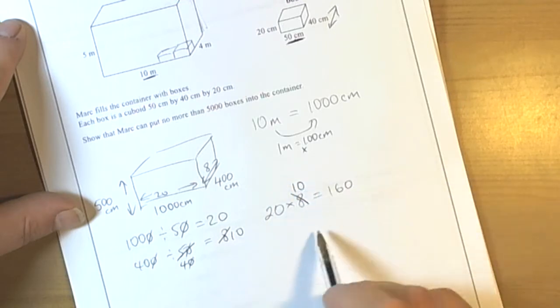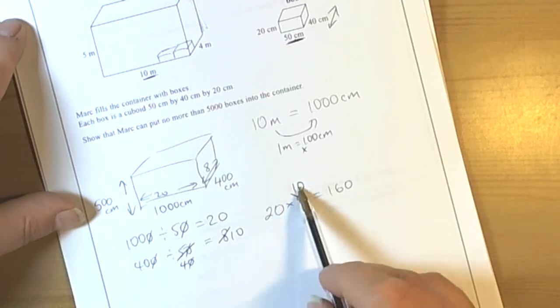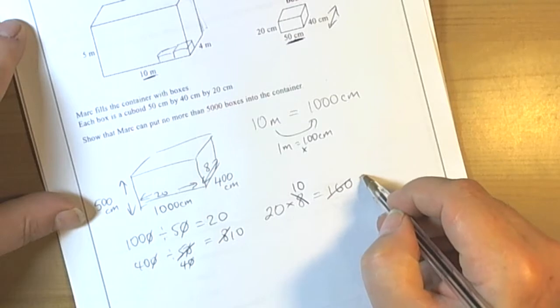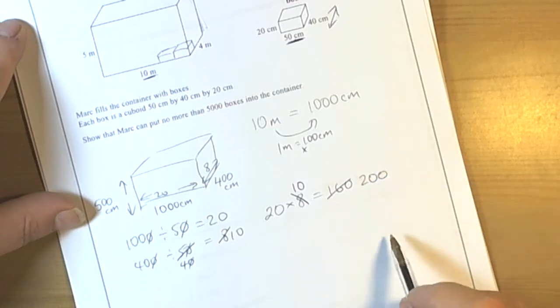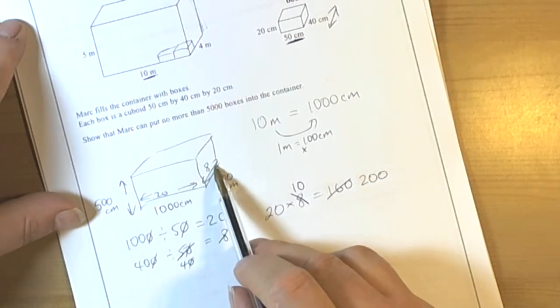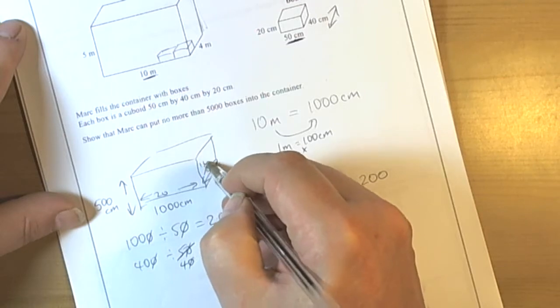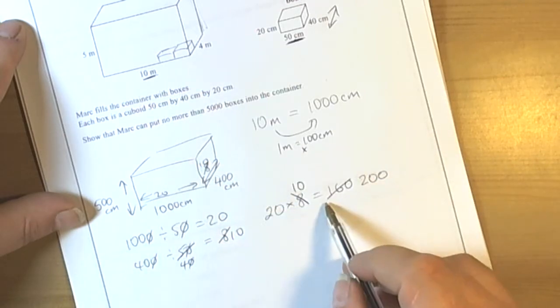Always check your working as you go through. So we've got twenty times ten which is actually two hundred. So we're going to have ten along that width, so the bottom layer is actually going to be two hundred.